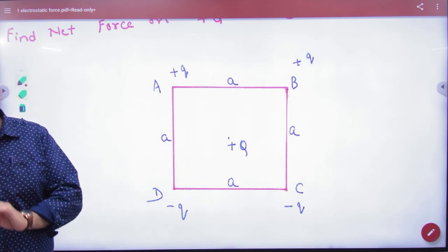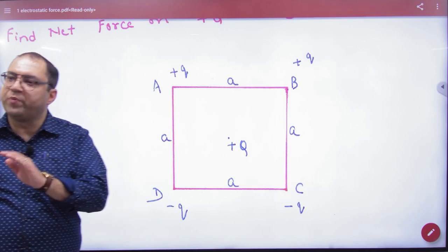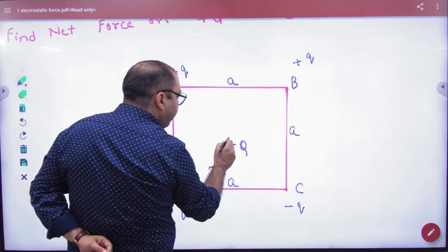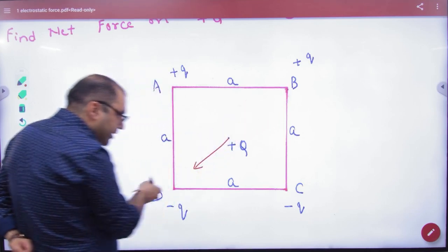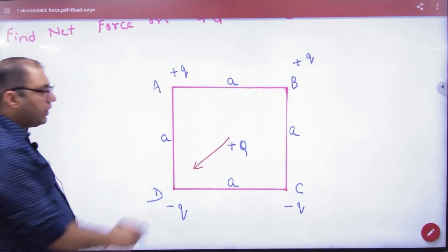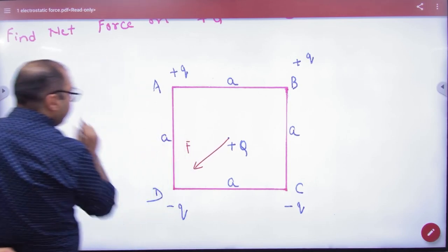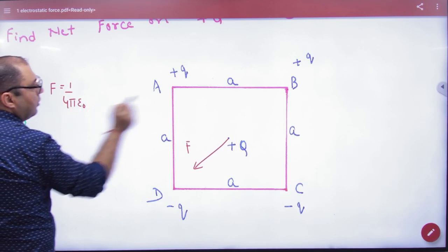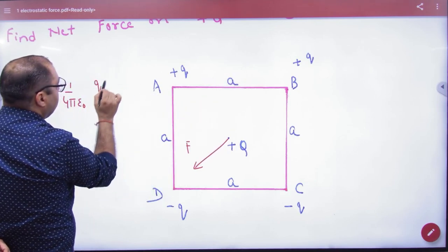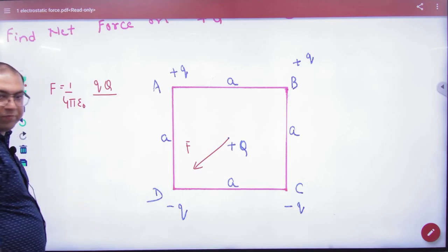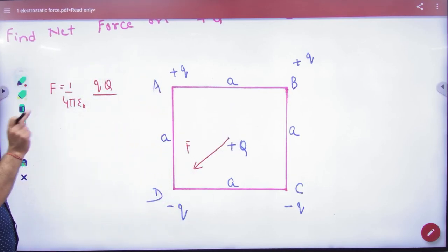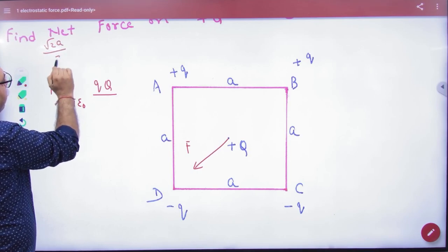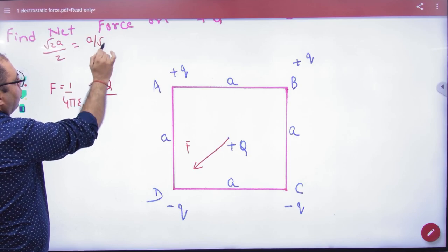Net force on capital Q is to be found. So plus q and capital Q will repel, straight repel. With some force F. F ki value kya hogi? 1 by 4 pi epsilon naught, small q into capital Q divided by - diagonal kya hota hai square ka? Root 2 a. And half diagonal kya hoga? Root 2 a divided by 2, yaani ki a by root 2.